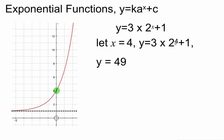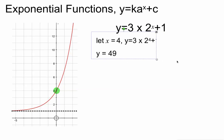2 to the power of 4 means 2 times 2 times 2 times 2, and that's 16. 3 lots of 16 is 48 plus 1 gives me 49. It's important that we understand how these things are calculated.